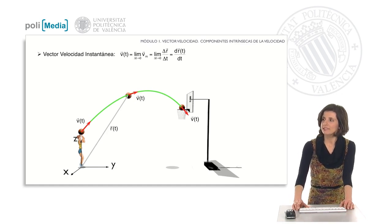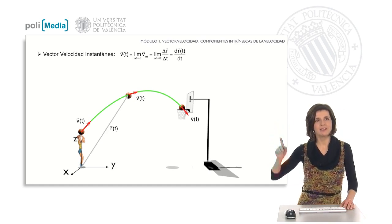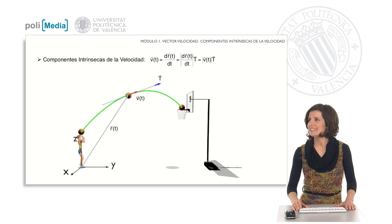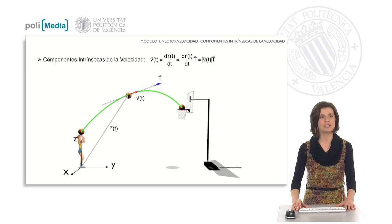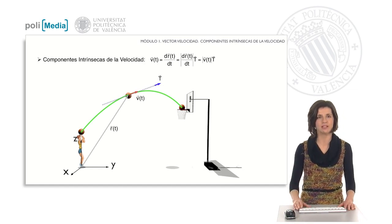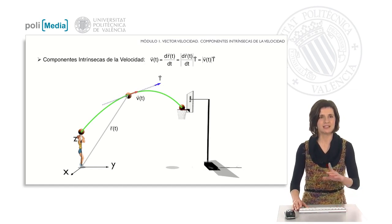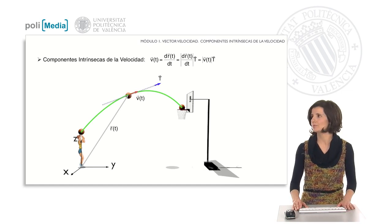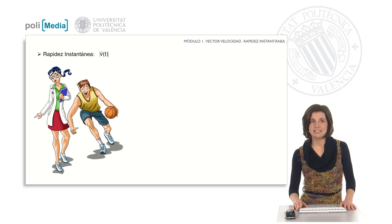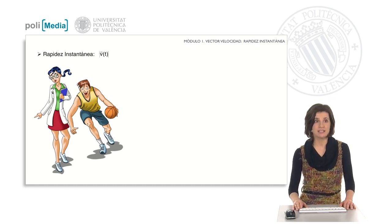The instantaneous velocity vector is always tangent to the trajectory. Therefore, it is much more convenient to express it by its intrinsic components. In this case it is represented by a modulus and a unit vector t, which is always tangent to the trajectory at any point. As for the modulus, in physics it is called the instantaneous velocity modulus, or instantaneous speed.